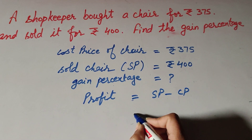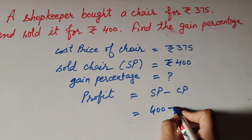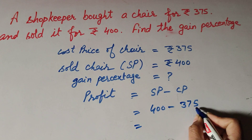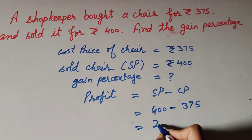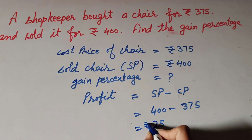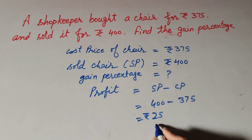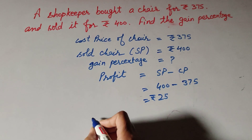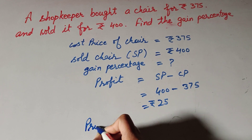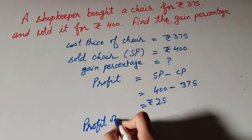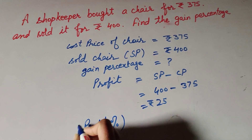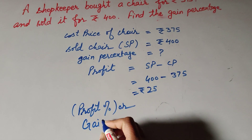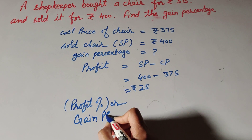Selling price minus cost price: 400 minus 375 equals rupees 25. So the shopkeeper got a profit of 25. Now we find the profit percentage, also called gain percentage.